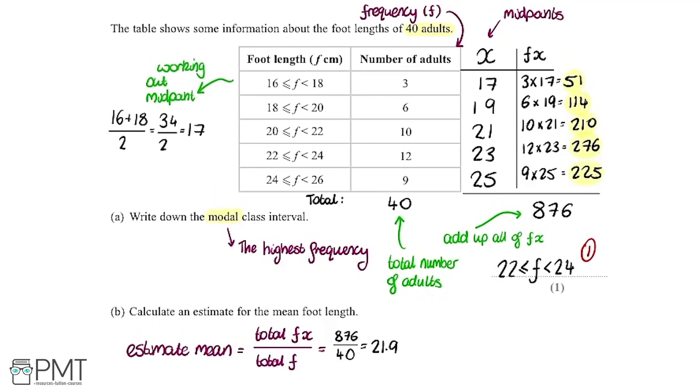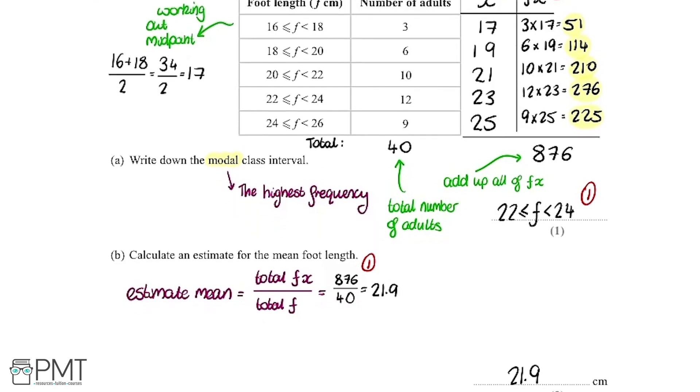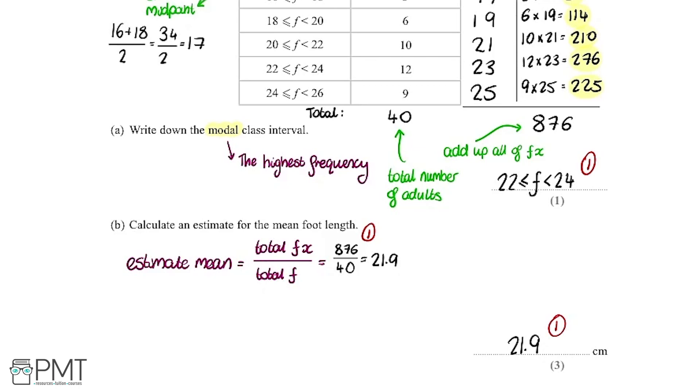In this case we get one mark for working out all the numbers in this column. You get one mark for our midpoint multiplied by frequency column. We then get another mark for realizing we need to add all those numbers up and divide it by 40, the number of adults. And then we get our third and final mark for the correct answer of 21.9.